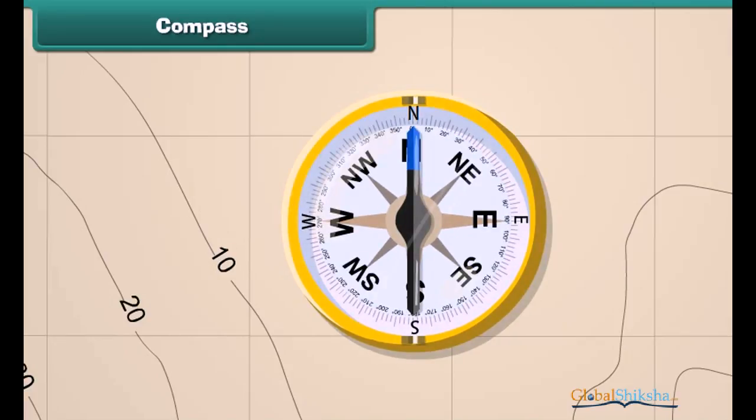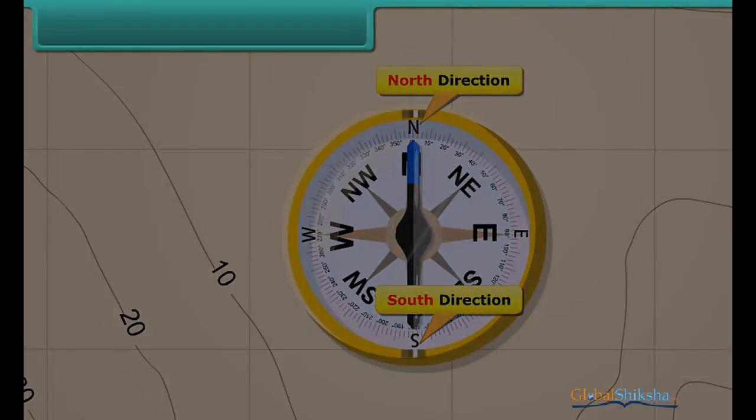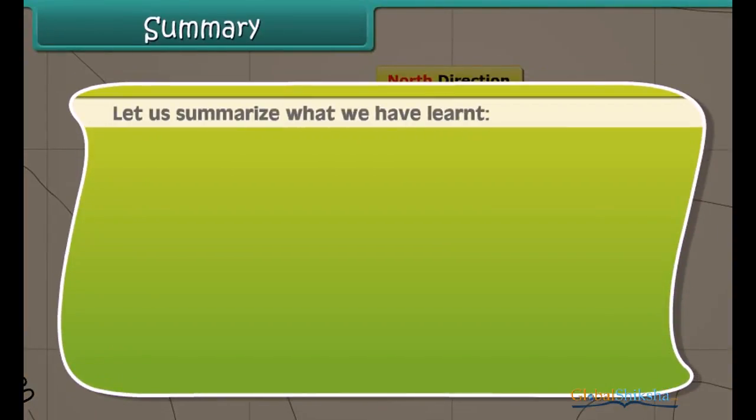Compass. This is a compass. It is a device we use to find directions. The compass has an arrow with a head and a tail.